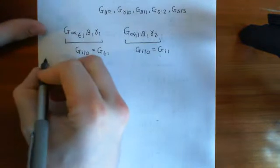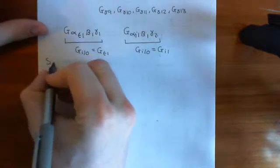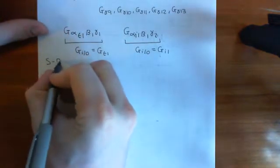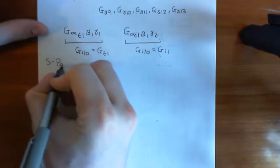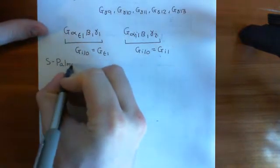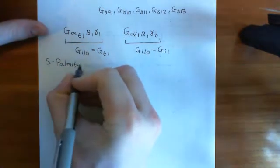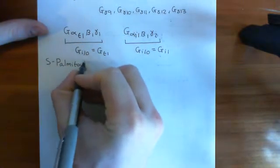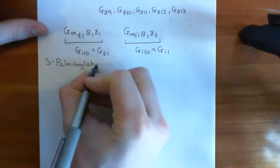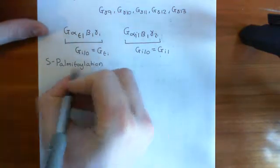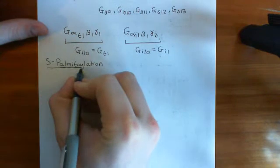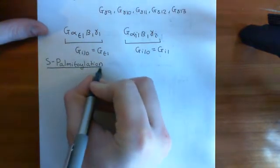We're going to start with S-palmitoylation of the alpha subunit — specifically, the lipid groups which are added onto the alpha subunit. S-palmitoylation is the lipid modification that occurs for the alpha subunits.